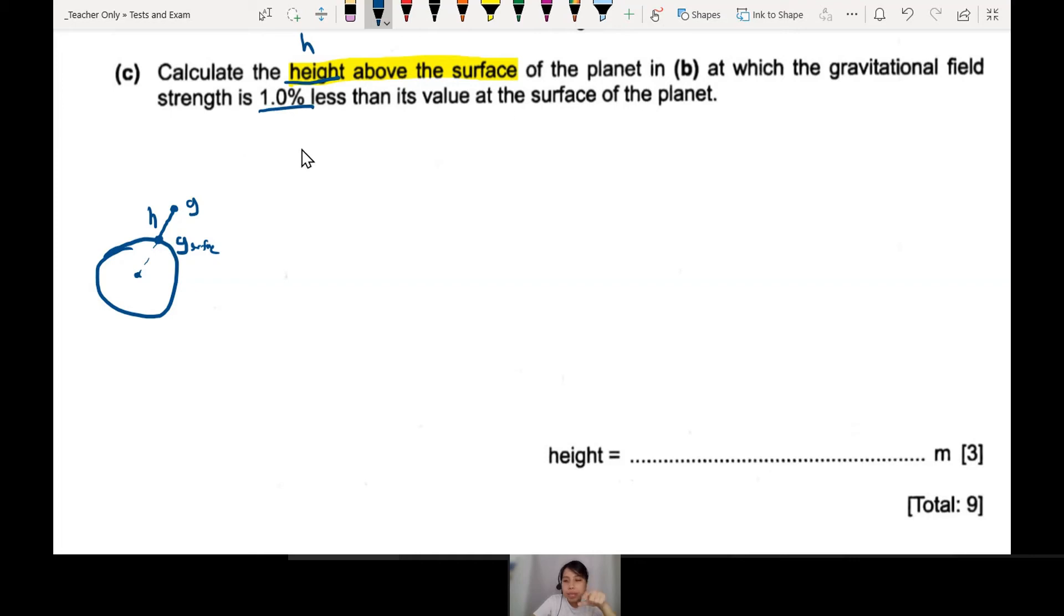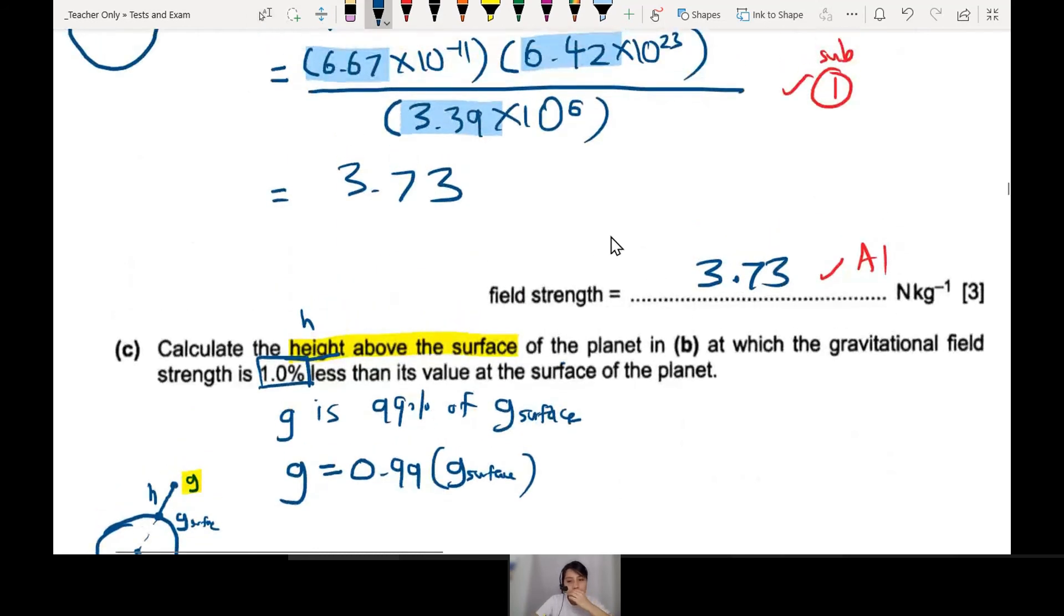One percent less than value at the surface means your new g over here is 99% of the g at the surface. You don't need to write this down, it's just working so you can understand what's happening. Now you go further, g is weaker - 99% because one percent less. So you can transfer this into an equation: g that we're trying to find, the new g, is going to be 0.99 of g surface. Can you find it or not? Maybe you can find it. You can use your previous value.